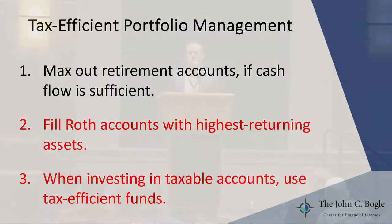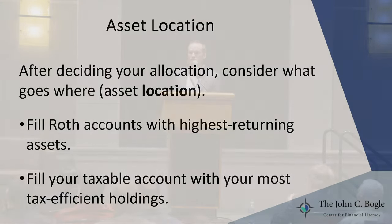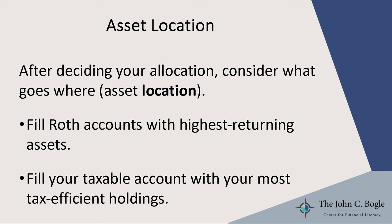So that's it for our first item: max out your retirement accounts. Items two and three — fill your Roth accounts with the highest returning assets, and when investing in a taxable account, fill it with tax efficient things — together have a name: asset location. The idea is that after you've decided your asset allocation — how much in U.S. stocks, international stocks, bonds — you take some time to think about which asset goes in which account. That's asset location, as opposed to asset allocation.